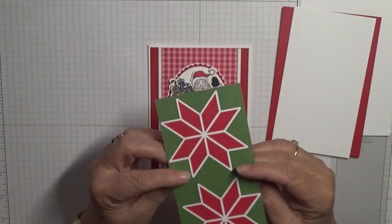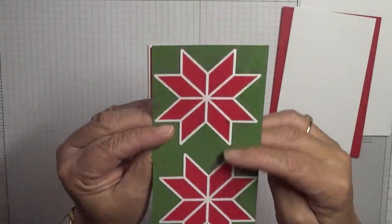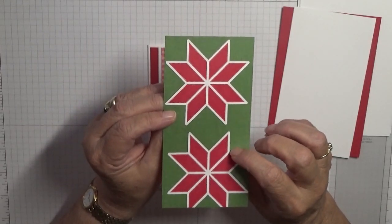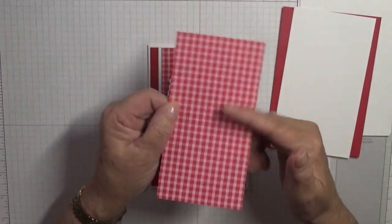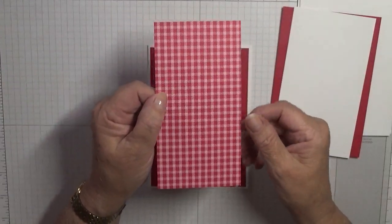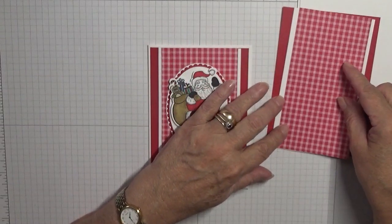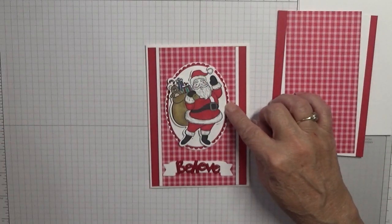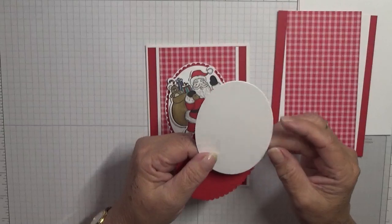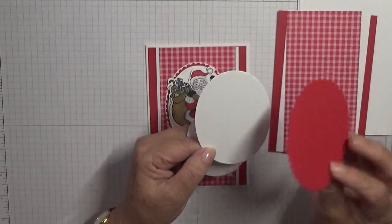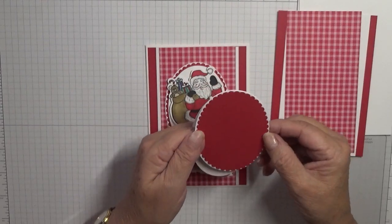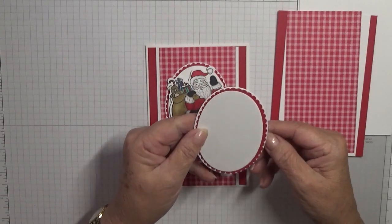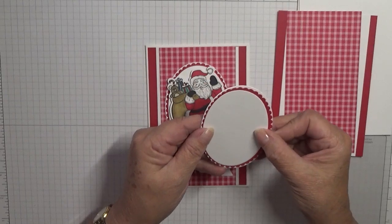I have got this red checked paper, it's an old retired paper, but I kept it because it's Christmassy. Use any red paper you want if you want to make this card. You'll also need three ovals: the largest plain oval, the largest scalloped oval, and the second largest plain oval, and they'll be just piled up like that.